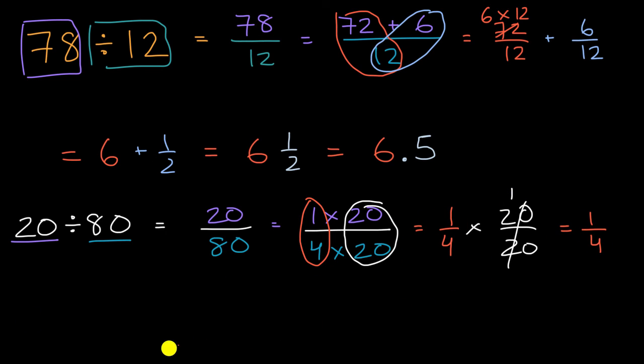Now, how would we express that as a decimal? Well, let's see. It's hard to express one-fourth in terms of tenths, because 4 doesn't divide easily into 10. But you can express it in terms of hundredths. So one-fourth is the same thing as 25 over 100. It's the same thing as 25 hundredths. Let me write it down here so that I can get more space. So one-fourth is the same thing as 25 over 100.